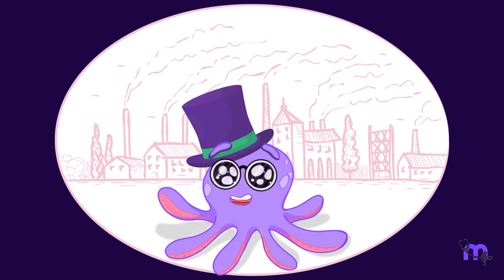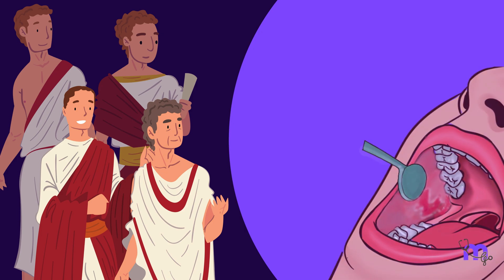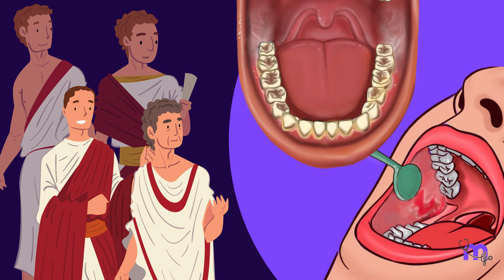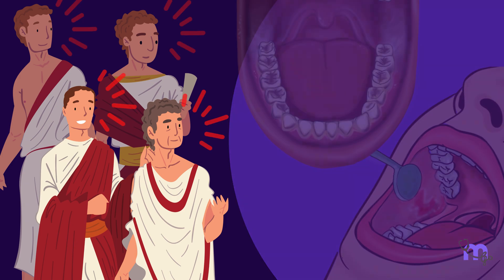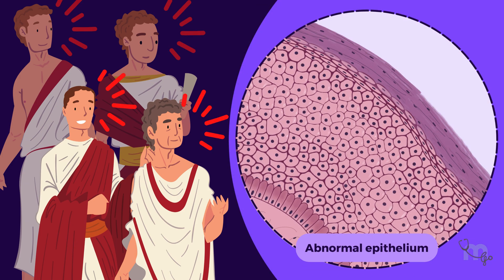Today, let me tell you a fascinating story from the 19th century. A group of European physicians noticed unusual lesions — some red, some white, and some a mix of both. These had a concerning characteristic: an abnormal epithelium.